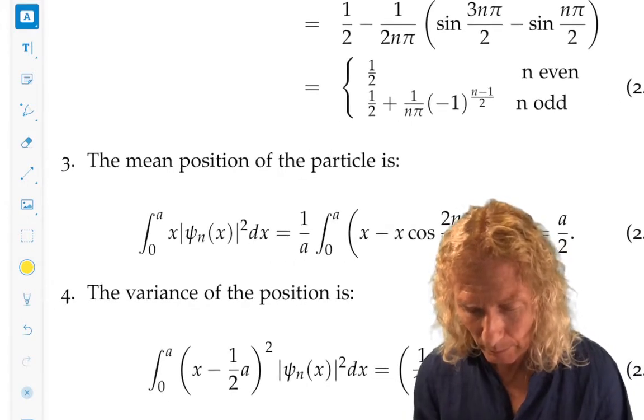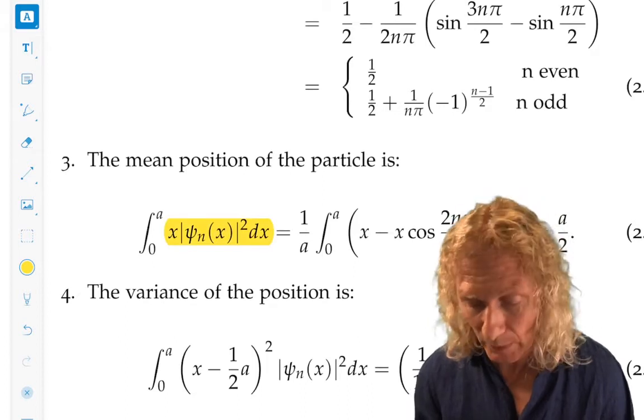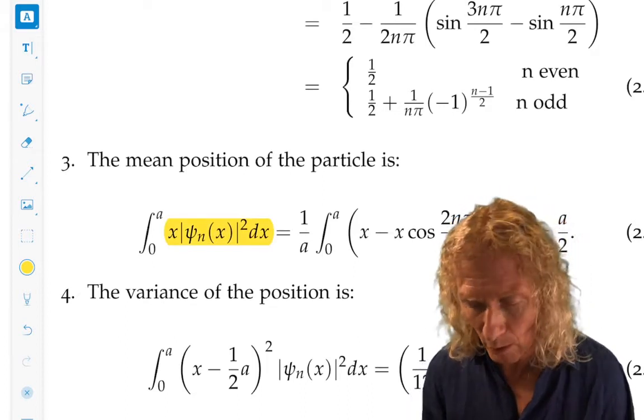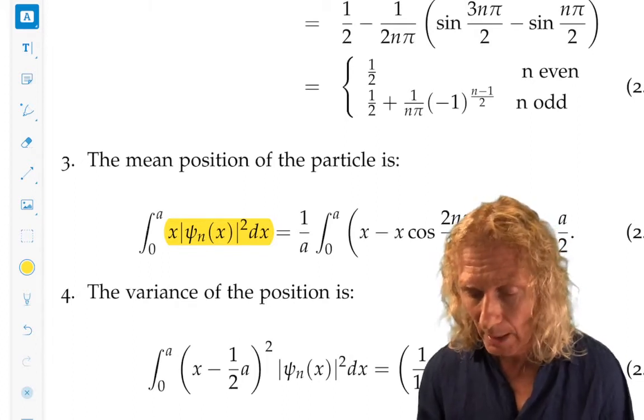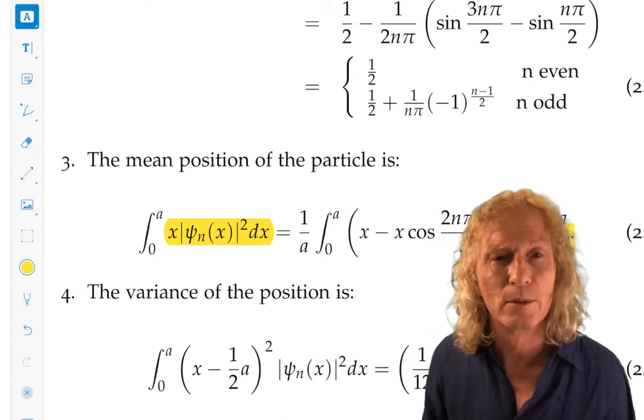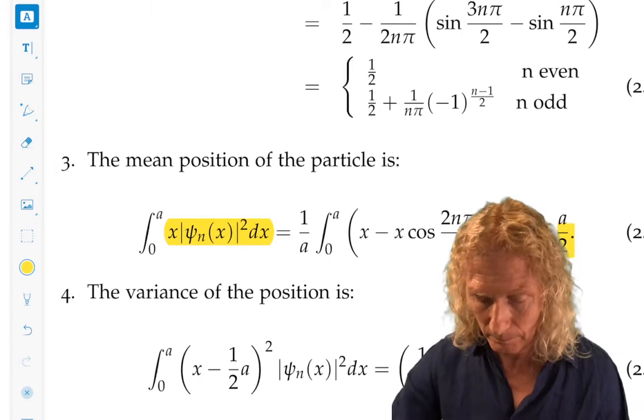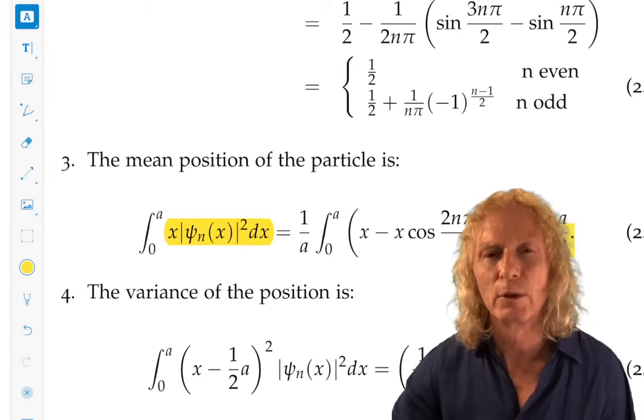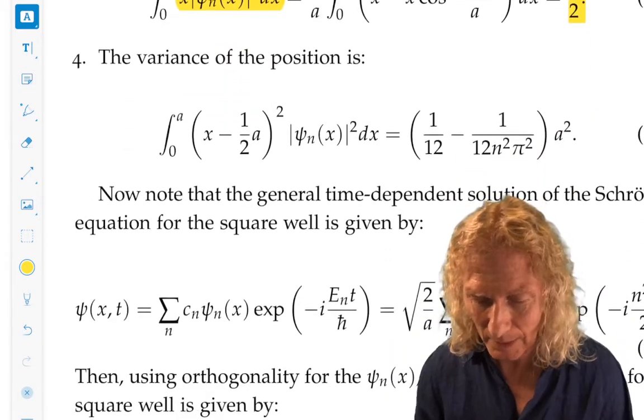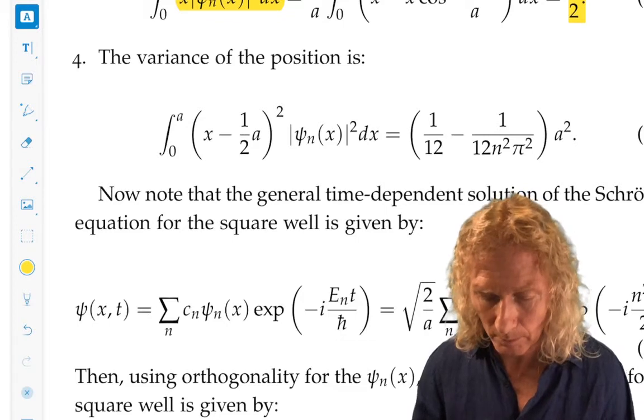The mean position of the particle: we integrate the position variable against the probability density over the entire domain, zero to a. And we get a over 2. So on average, the particle is going to be at the midpoint of the well. Kind of intuitively clear, but be careful with intuition and quantum mechanics. And the variance can be computed and we'll see what that's useful for later.